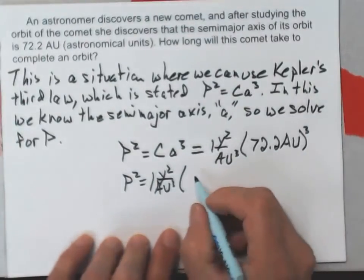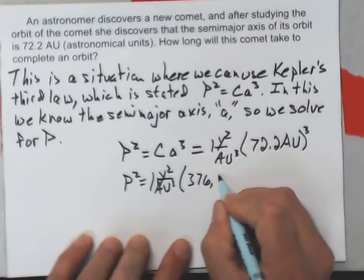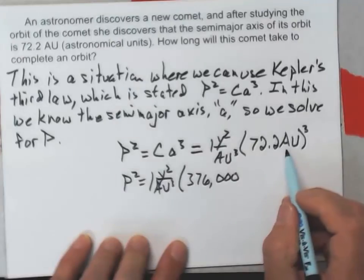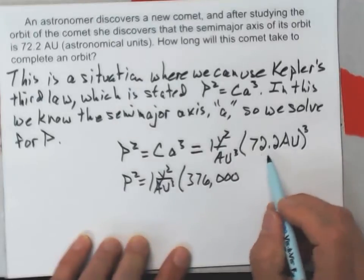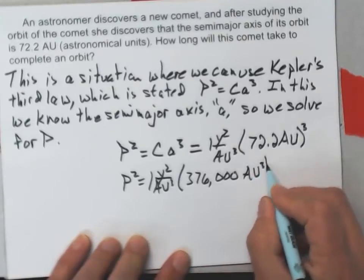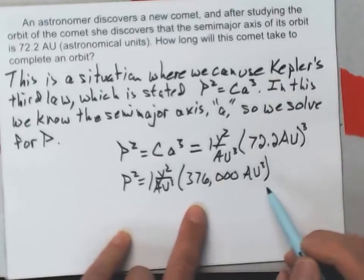And I'm going to go ahead and cube the 72.2. When I do that calculation, I get 376,000, and the units, the AU gets cubed along with the number. So I now have AU cubed in there, and I don't have the parentheses cubed anymore because I actually did that.